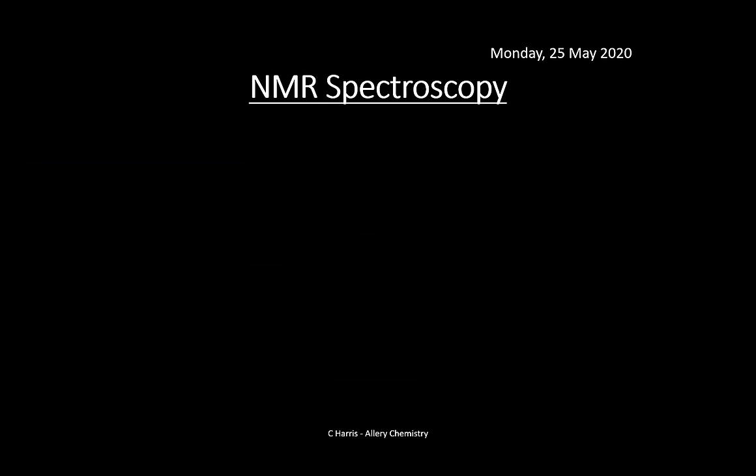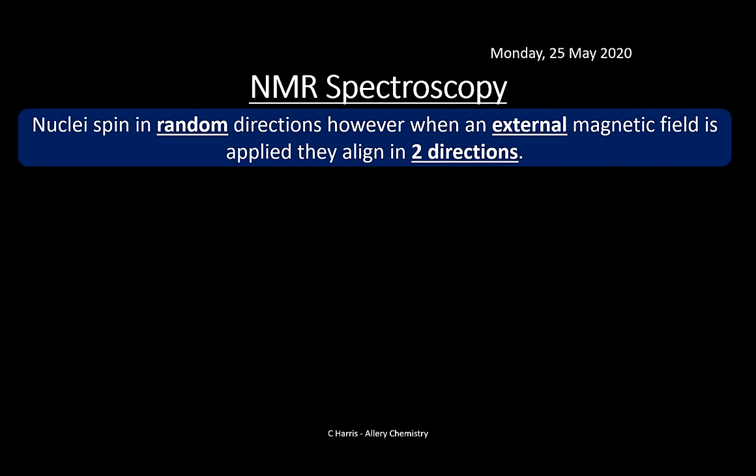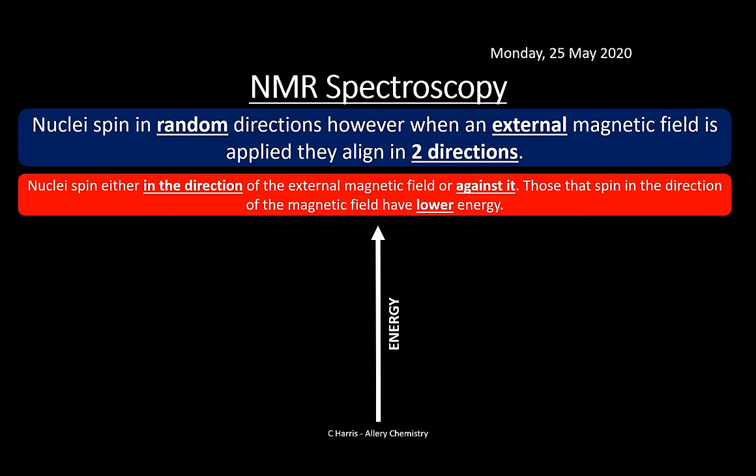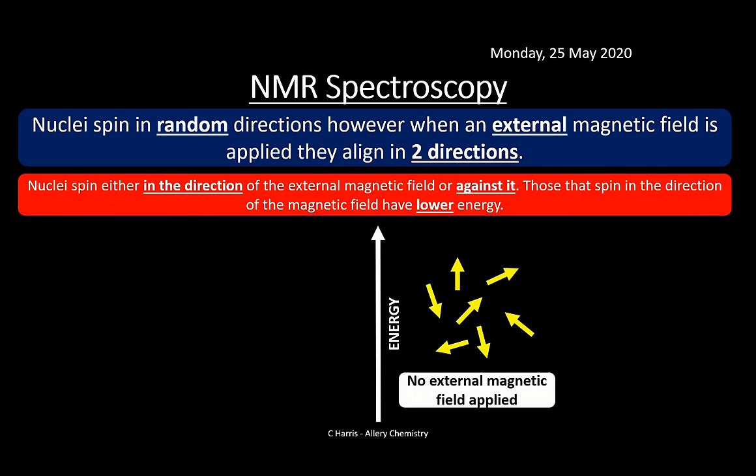To summarise: we have proton and carbon-13 NMR. NMR can only detect atoms with an odd number of nucleons — even-numbered atoms aren't detected. The spinning nucleons produce a small magnetic field. Without any external field, nucleons spin in random directions. When an external magnetic field is applied, they align either with the field (lower energy) or against it (higher energy).